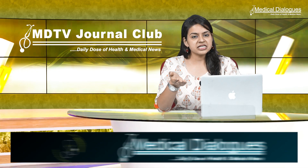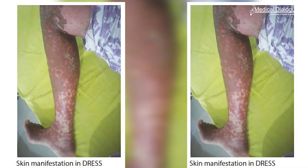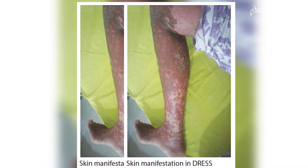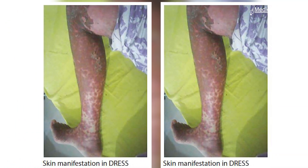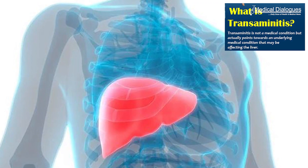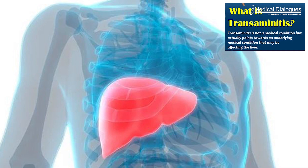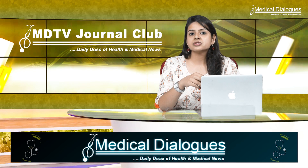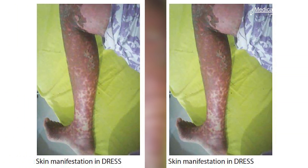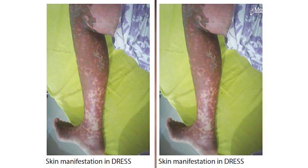Three weeks after the initiation of this anti-tubercular therapy, she developed an erythematous skin rash all over the body along with a recurrence of fever. Routine lab examination revealed transaminitis and eosinophilia. Her anti-tubercular drugs were withheld, and with the diagnosis of DRESS, she was started on a high dose of steroids.